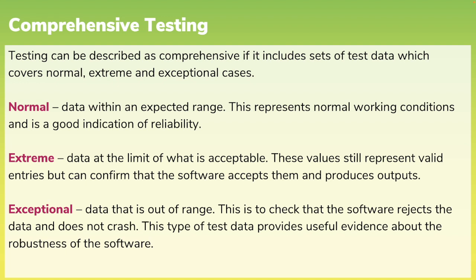Exceptional test data is data that is out of range. This is to check that the software rejects the data and does not crash. For example, if we were dealing with percentages, minus 42 and 136 would be exceptional pieces of test data. This type of test data provides useful evidence about the robustness of the software.